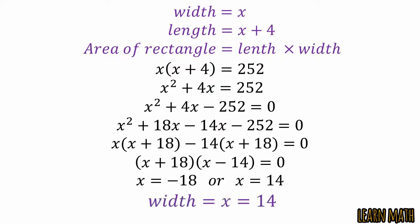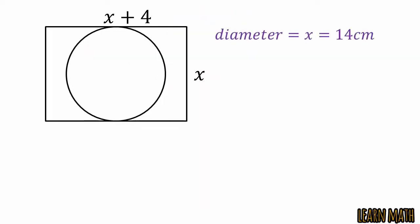Now, the diameter of the circle is equal to the width which is equal to 14 cm. So, the radius of the circle will be 7 cm.